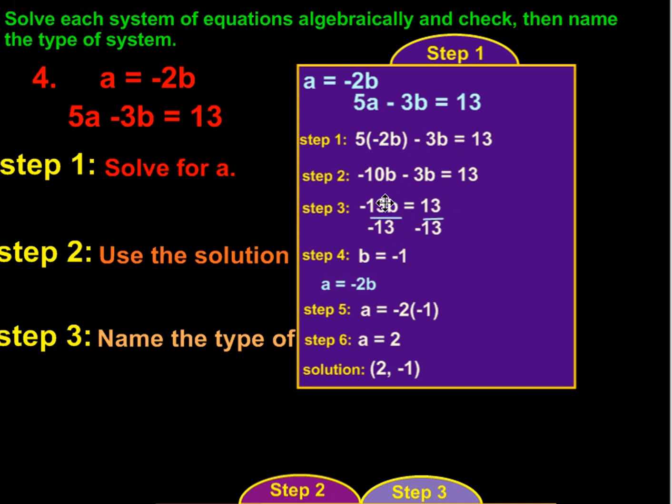We divide by negative 13. That isolates the b, and it gives us negative 1. So, we know that b is equal to negative 1. We come back to the original equation of a equals negative 2b. And instead of b, we can now put a negative 1. a equals negative 2 times negative 1, which is going to give us a equals positive 2. So, if we think of it as ab, we are then left with a being 2, and b, as we discovered before, was negative 1. So, 2 negative 1 is the solution.